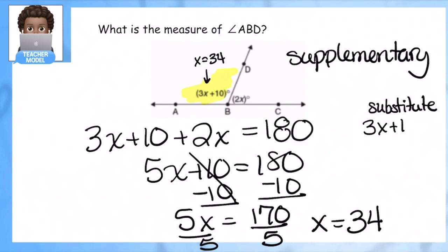3x plus 10, so 3 times 34 plus 10. 3 times 34 is 102—I'm doing mental math, let me triple check, yes—102 plus 10, so this angle is worth 112. This is the measure of angle ABD. I'm going to highlight it so they can see my final answer. Hit pause and jot this down into your notes.